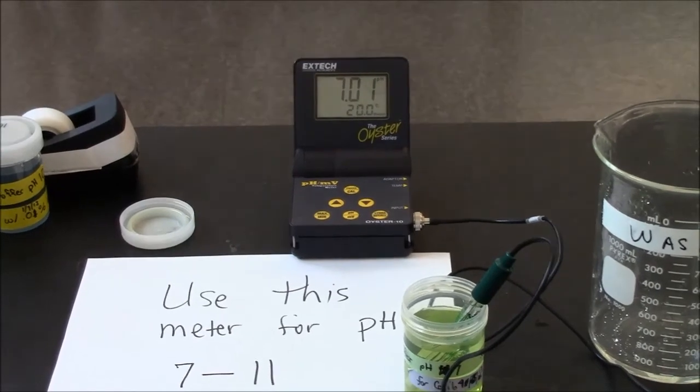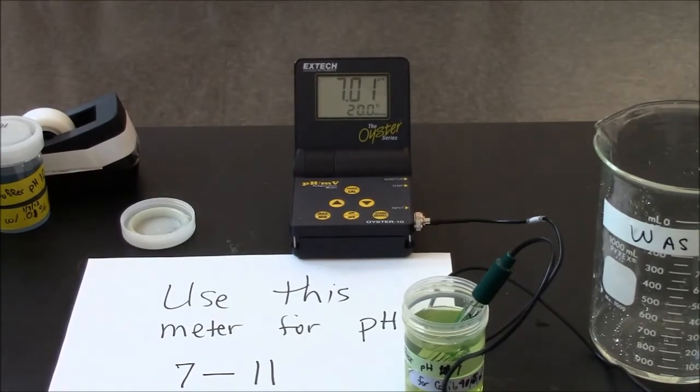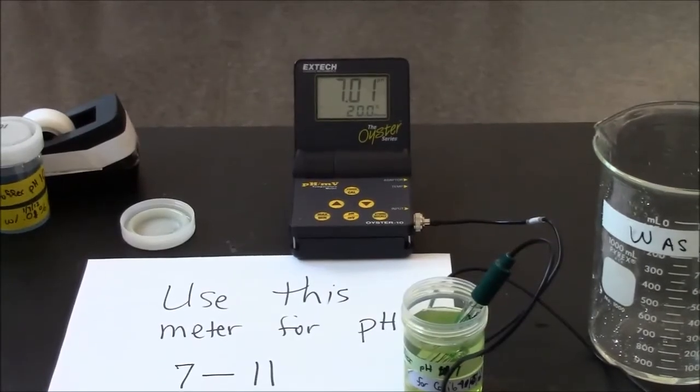When you get to the titration phase, your pH measurement doesn't have to be precise. So at that stage, think speed is more important than accuracy and swirl it, get a reading, go back and titrate some more.